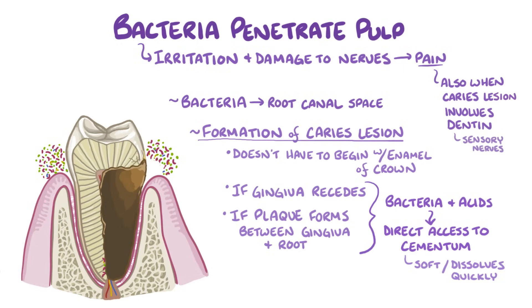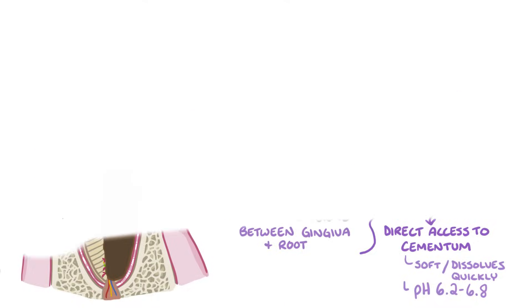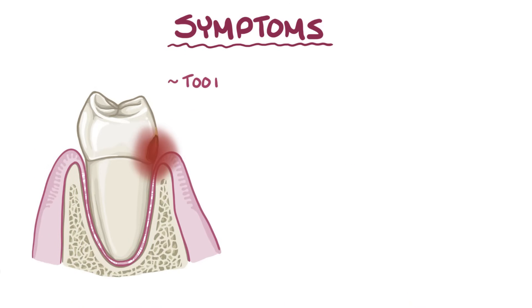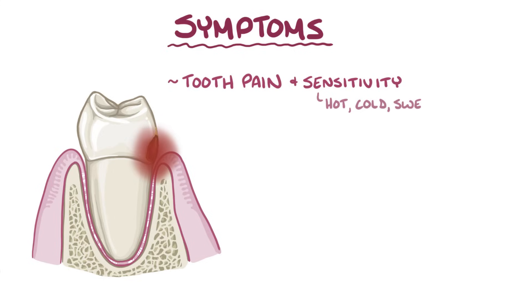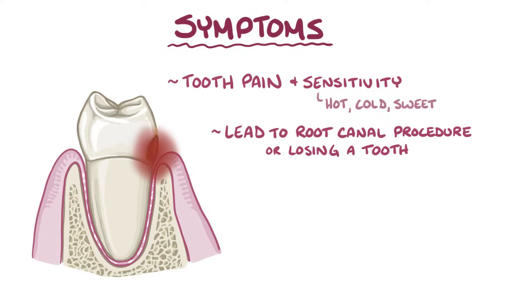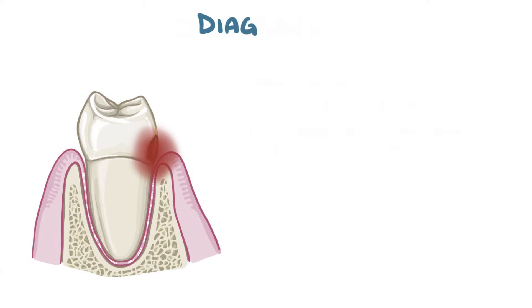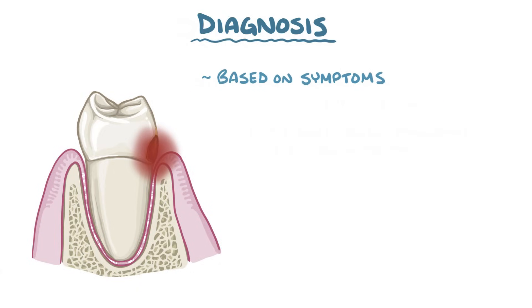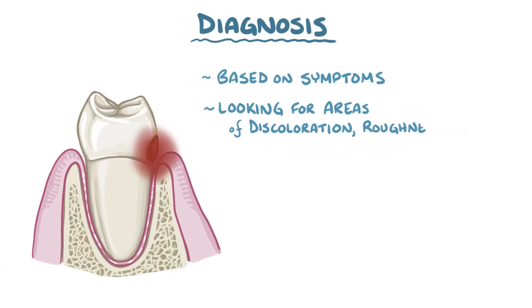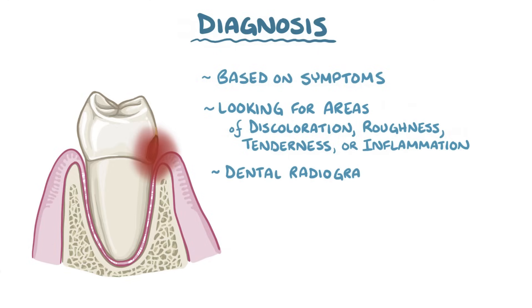The demineralization of cementum and dentin can happen in a pH range of 6.2 to 6.8. Symptoms of dental caries include tooth pain and sensitivity, especially when chewing or drinking something cold, hot, or sweet. If the process continues, it can eventually lead to a root canal procedure or even losing a tooth. Diagnosis is usually made based on symptoms and looking for areas of discoloration or roughness, tenderness or inflammation in the mouth, as well as using dental radiographs.